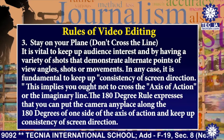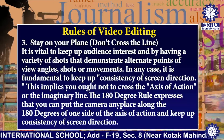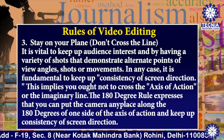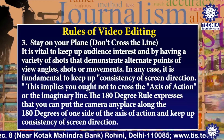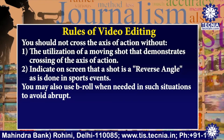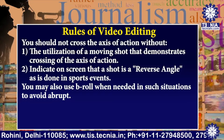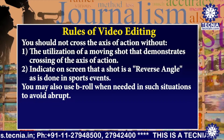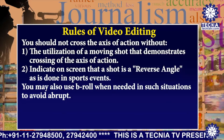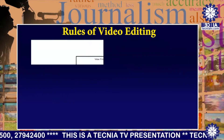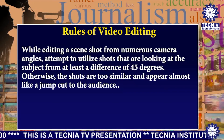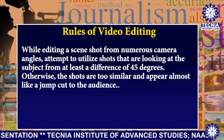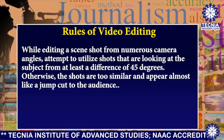This means you ought not to cross the axis of action or the imaginary line. The 180-degree rule states that you can place the camera anywhere along the 180 degrees of one side of the axis of action and maintain consistency of screen direction. You should not cross the axis of action without using a moving shot that demonstrates the crossing, as is done in sports events. You may also use b-roll footage to avoid abrupt cuts. While editing a scene shot from numerous camera angles, attempt to use shots that differ by at least 45 degrees; otherwise, shots are too similar and appear almost like a jump cut.